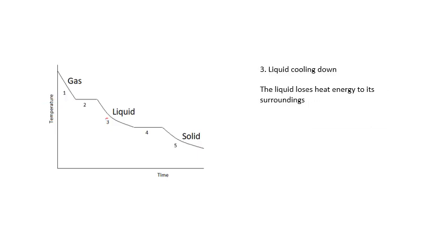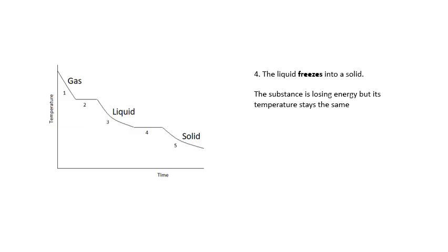Number three is the liquid cooling down. So the liquid loses heat energy to its surroundings and it gets colder. The liquid molecules are losing kinetic energy, they are slowing down, and we are losing heat energy to the surroundings. Number three is a liquid cooling down until we get to this temperature here, which is the melting point. Number four, the liquid freezes into a solid. In the case of water, that would be zero degrees centigrade. The liquid freezes into a solid and more bonds are formed. Lots and lots of bonds are formed, so the particles aren't free to travel around or change positions at all.